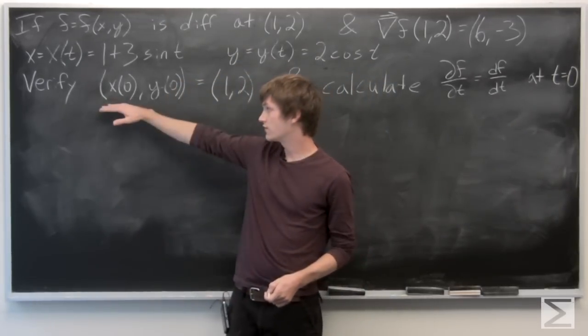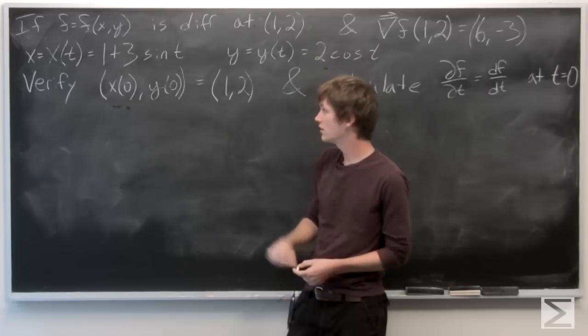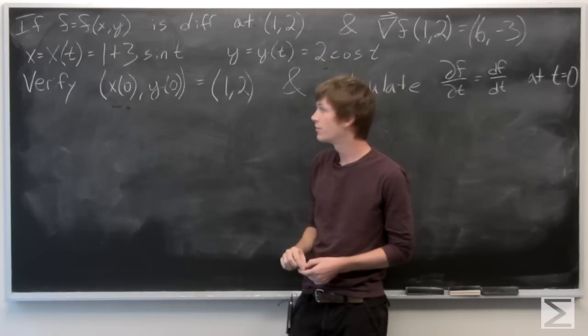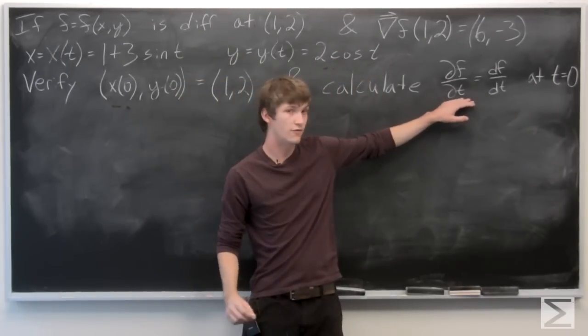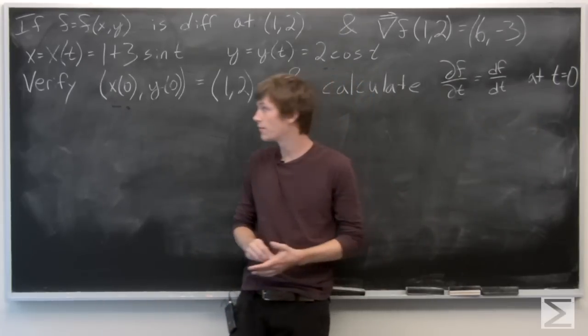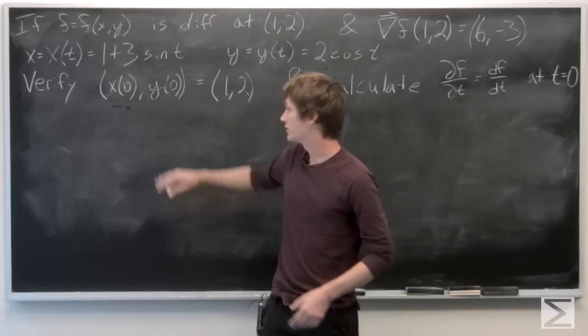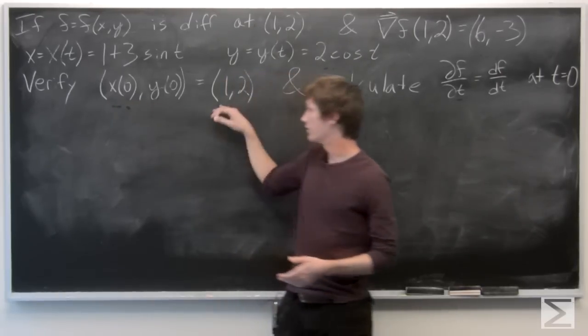We want to first verify that the point (x(0), y(0)) equals (1, 2), and then we want to calculate the partial derivative of f with respect to t at the point when t is equal to 0. So first we're going to verify that x of 0 and y of 0 equals (1, 2).